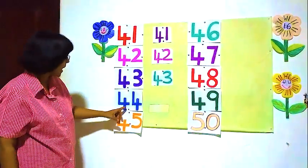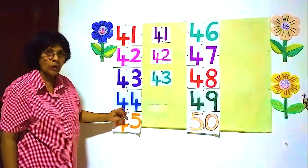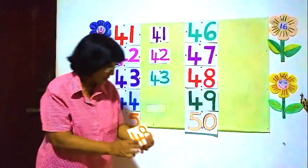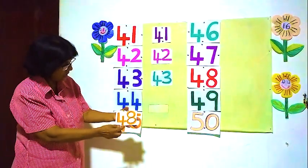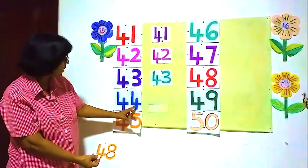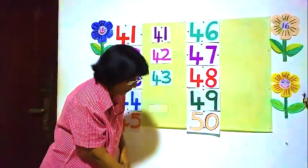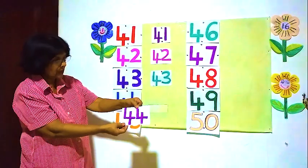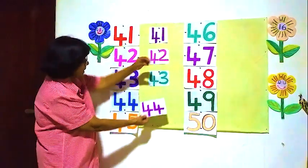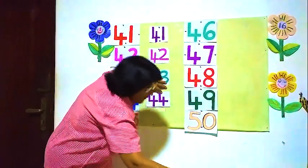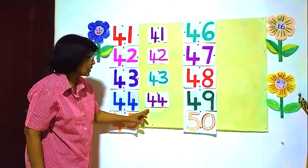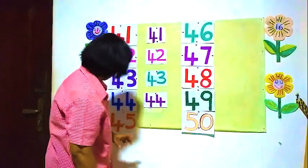Now this one: 4 and 4, 44. So you see — what about this one? What is this number? 4 and 8, 48. No, this is 44, this is not 48. Here is 44 — yes, this is 44, 4 and 4.